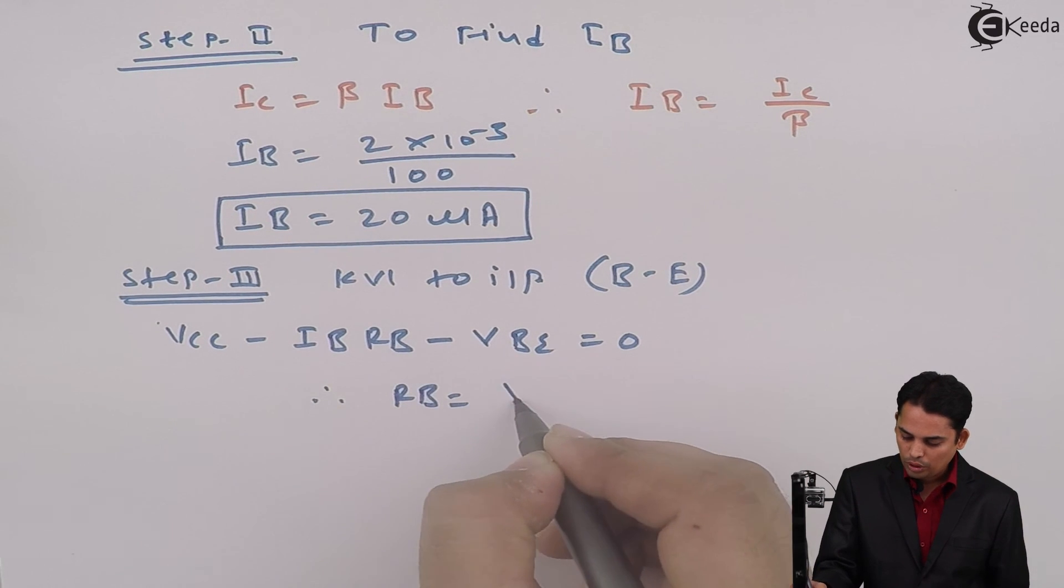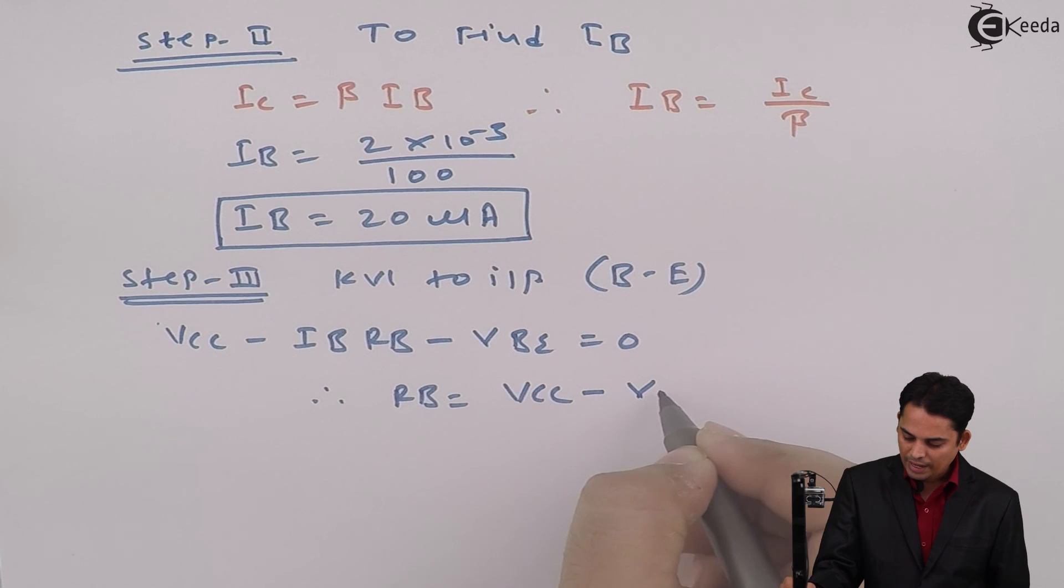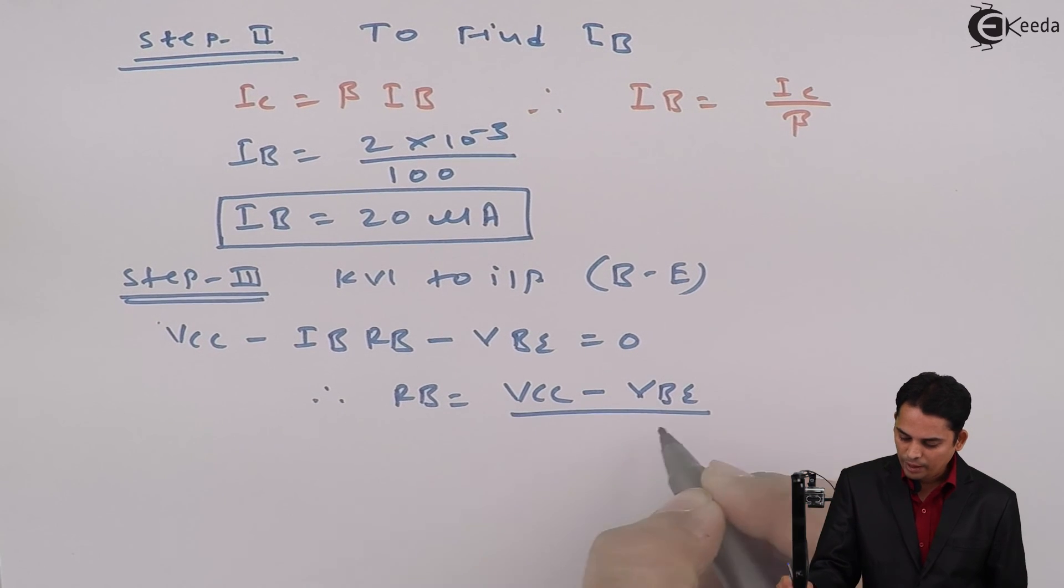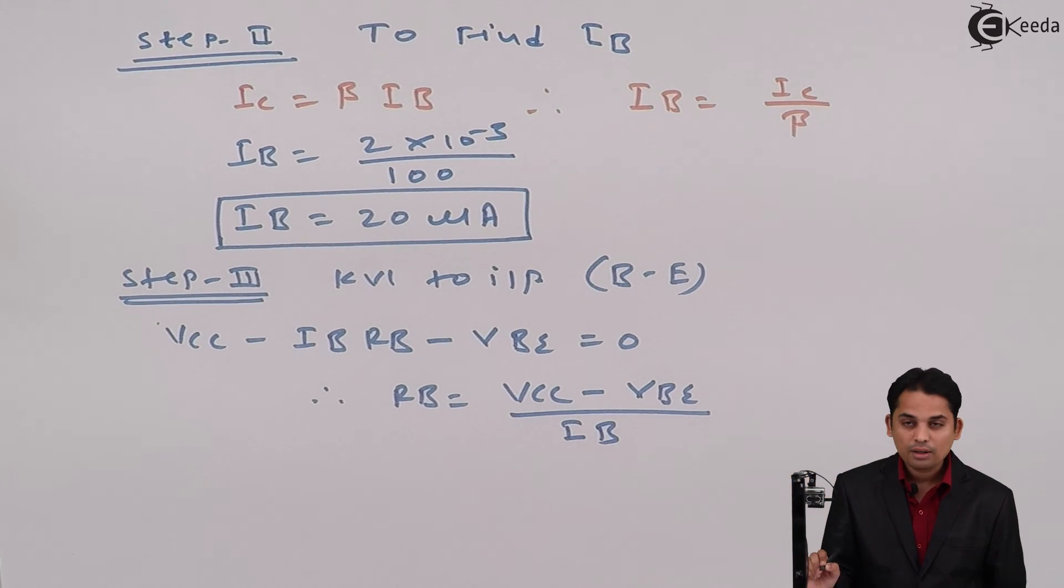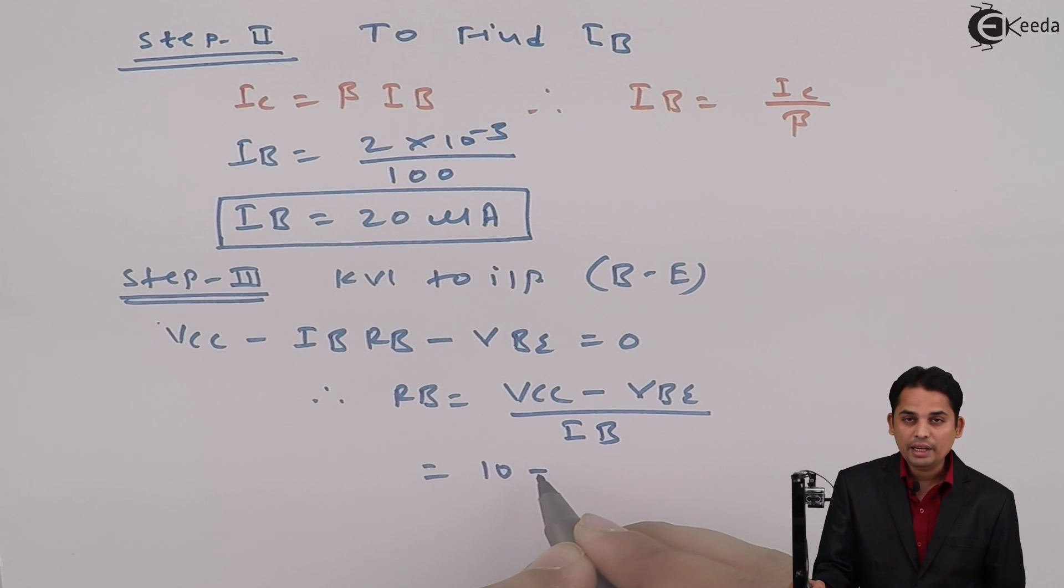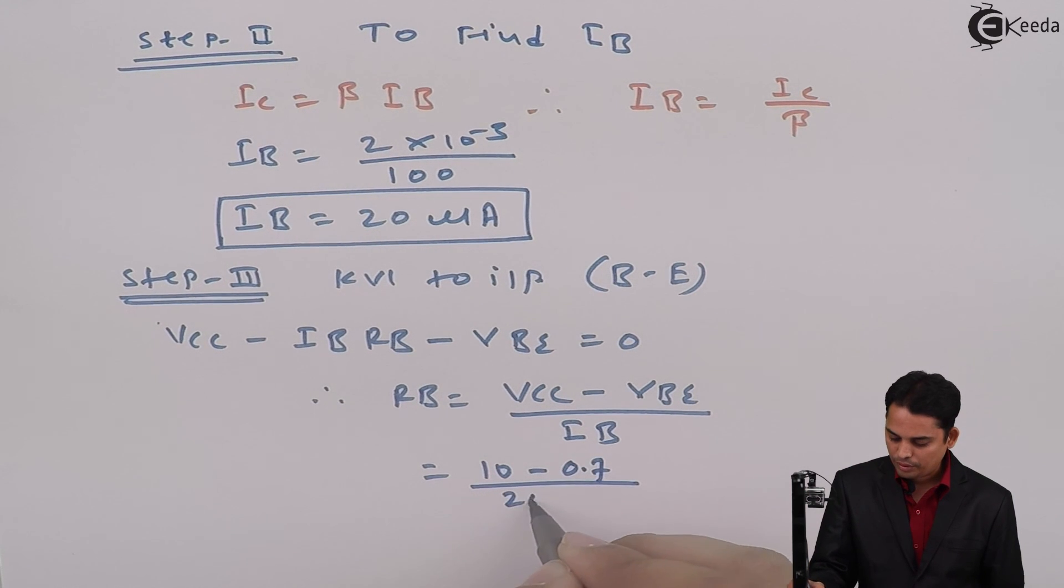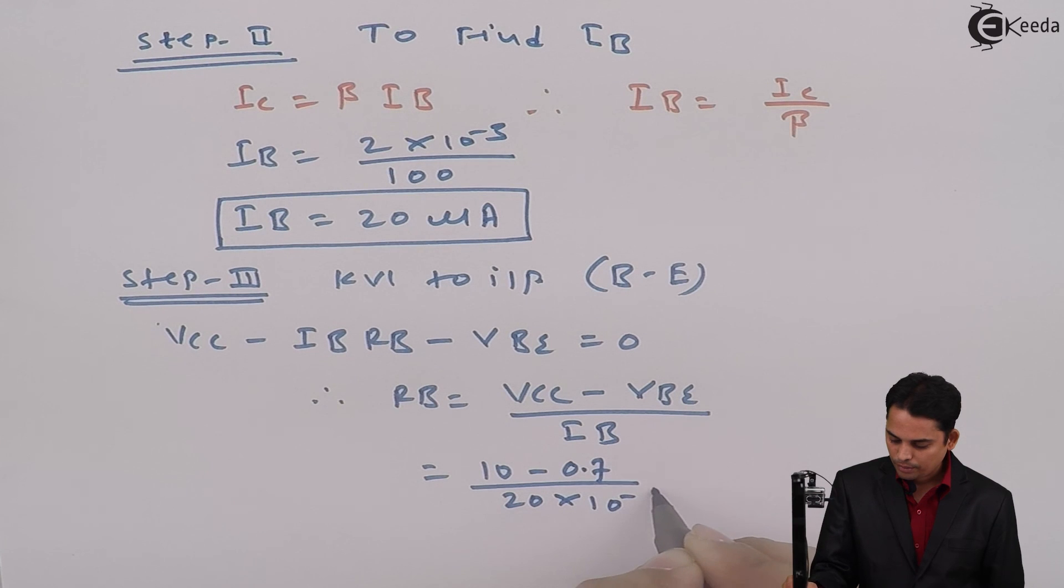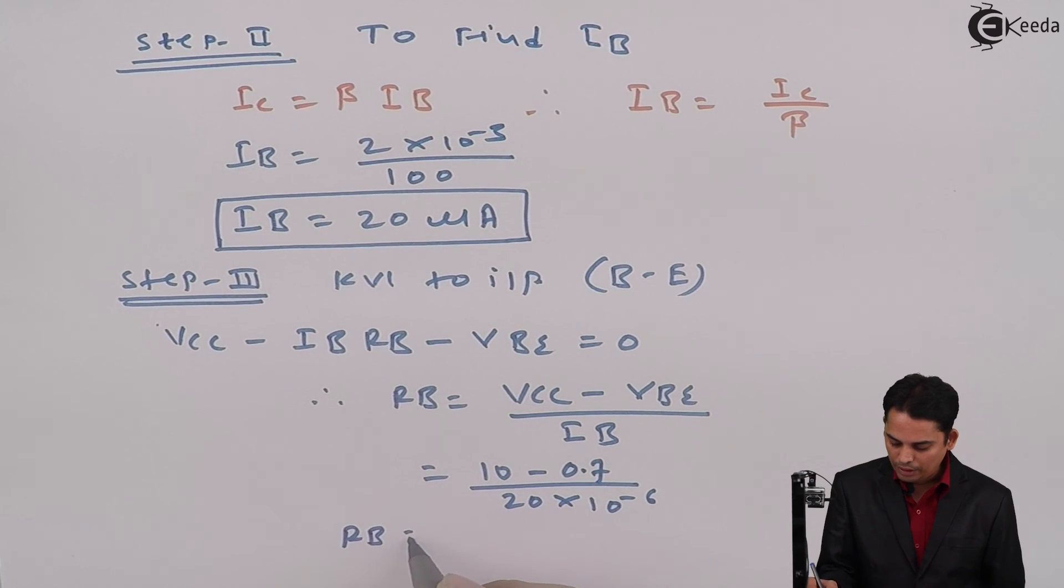And hence, RB = (VCC - VBE) / IB, where VCC is 10 volts, VBE is 0.7 volts, and IB is 20 microamperes. If we solve this, the value of RB will be 465 kΩ.